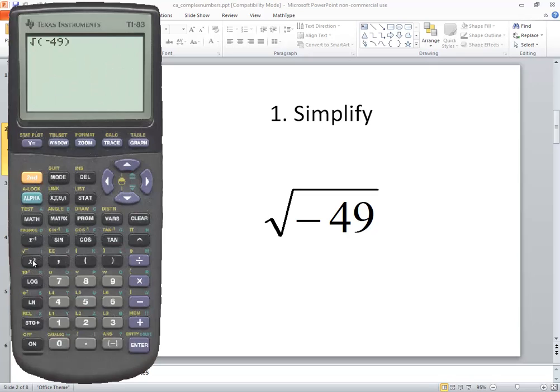Now if I do a square root of negative 49, closing parentheses and press enter, it gives me 7i. So if you're getting a non-real answer, go set your mode and that'll fix it.